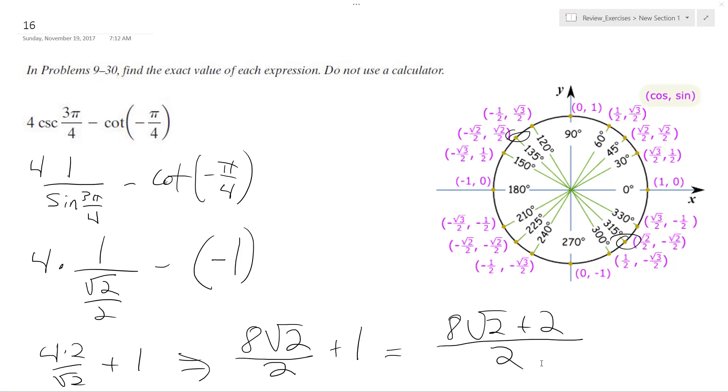Actually, you know what? Could have made this a lot simpler. That 8 gets divided by 2, so we end up with 4 root 2 plus 1. All right, that's it. I hope that helped.